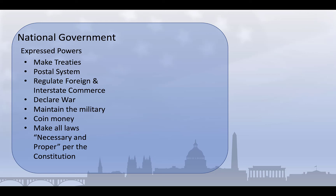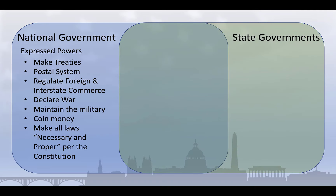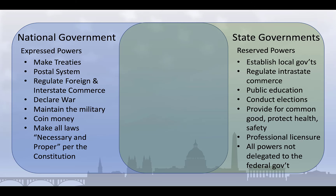The Tenth Amendment also provides that any power not specifically granted to the federal government is reserved to the states. Because of this, these are sometimes referred to as the reserved powers. These include a wide variety of governmental functions, including things like establishing local governments, establishing public education systems, conducting elections, providing for the common good, and all other powers not formally granted to the federal government or explicitly denied to the states.